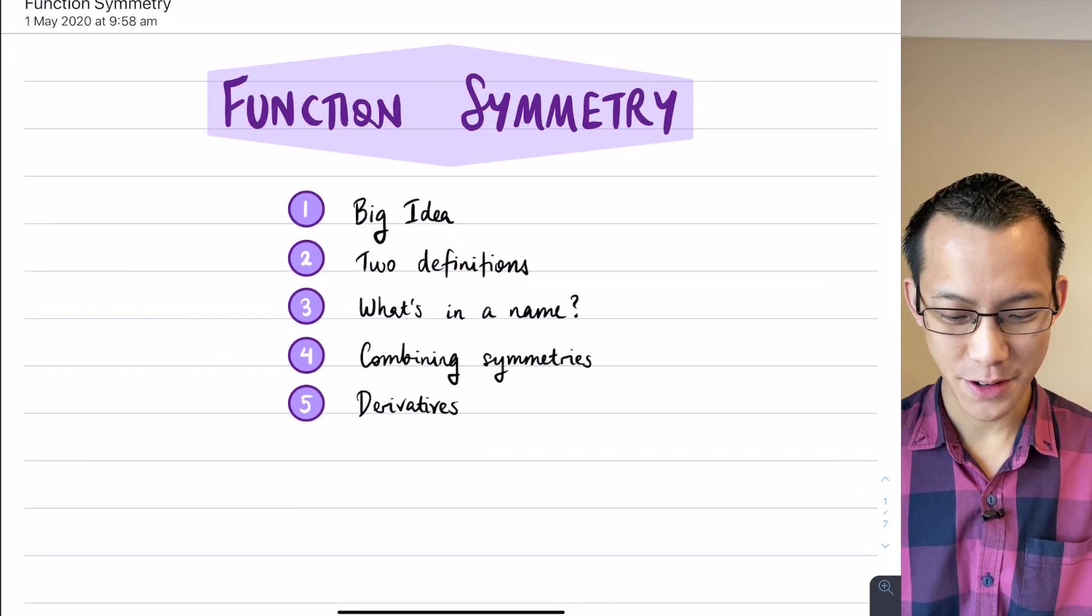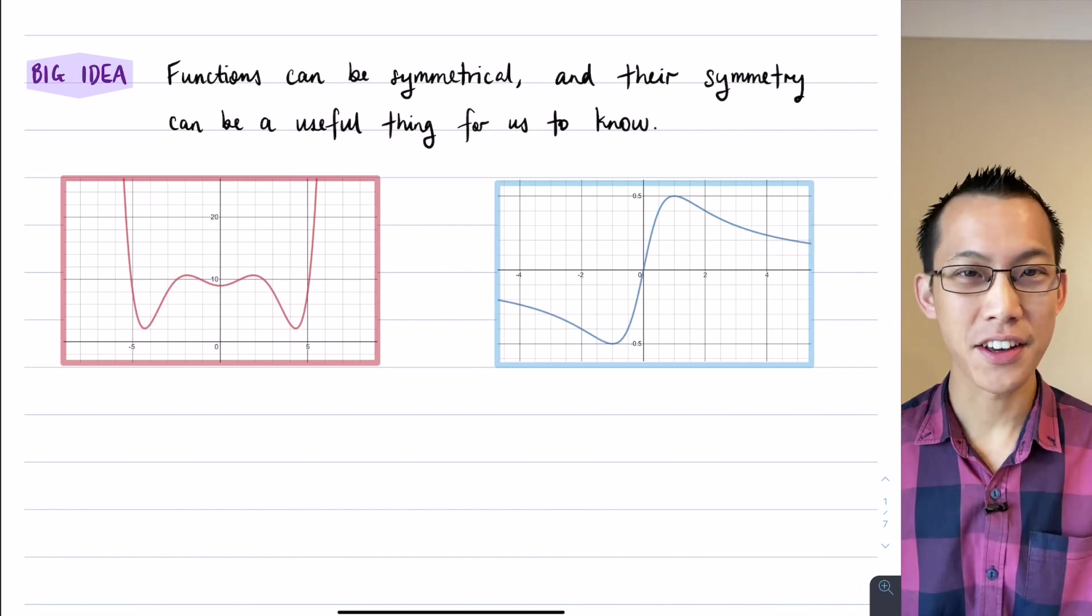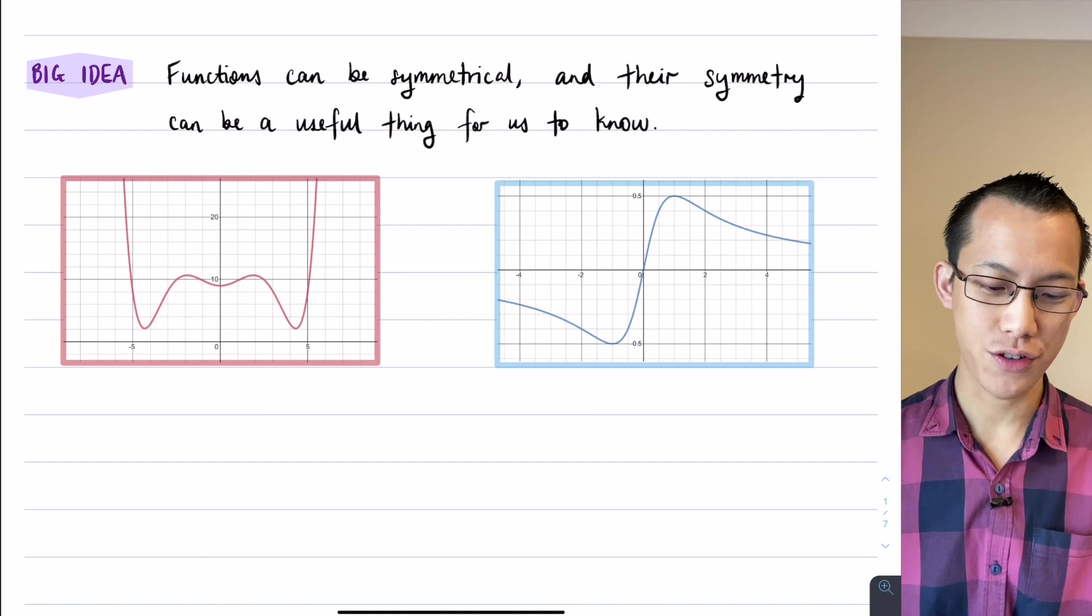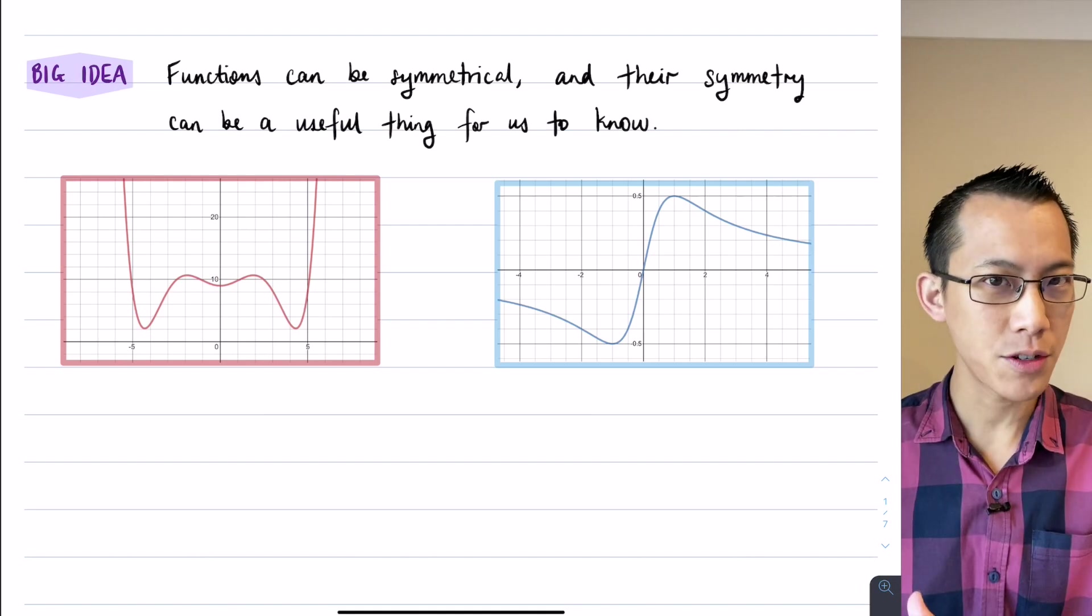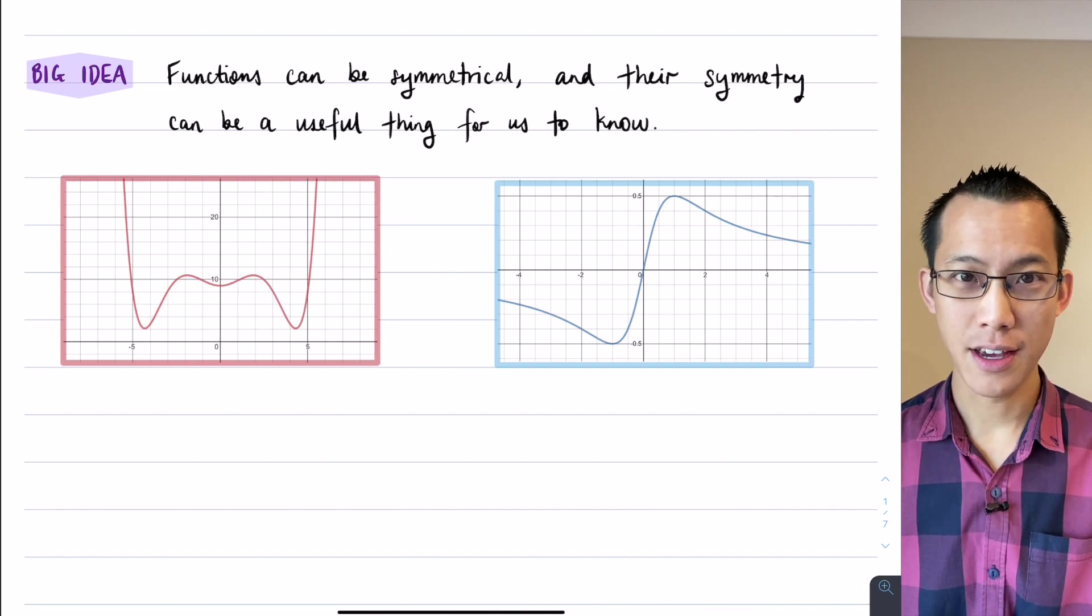When it comes to function symmetry, what is the big idea? It's very simple. Functions, just like shapes and other kinds of objects we're used to dealing with, they can be symmetrical, and their symmetry, if you can recognize symmetry and manipulate it, that can be a really useful thing for us to recognize.